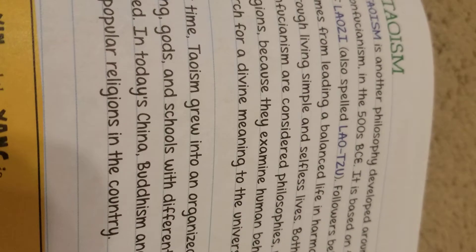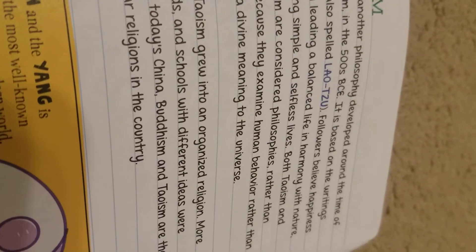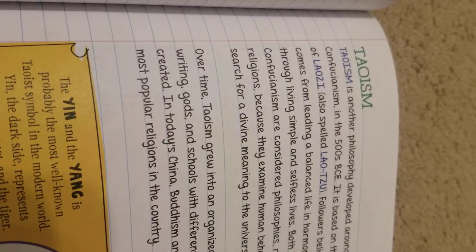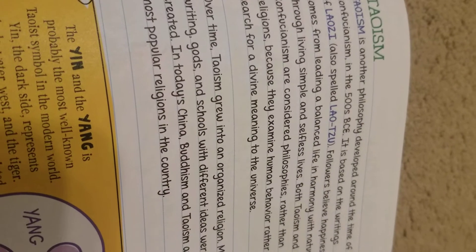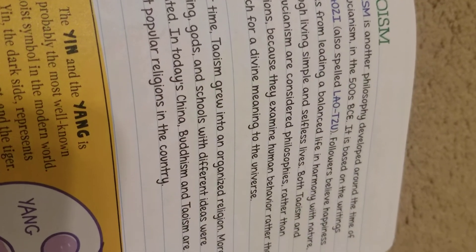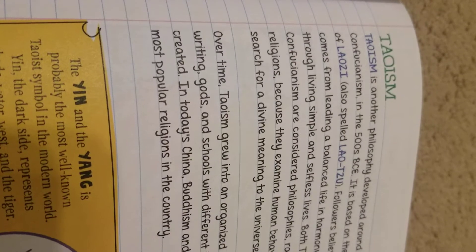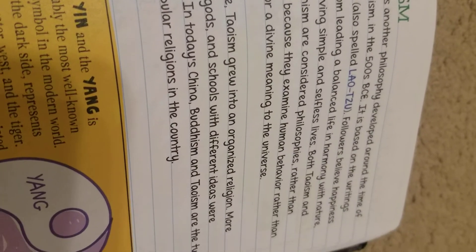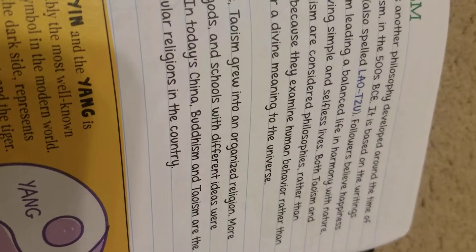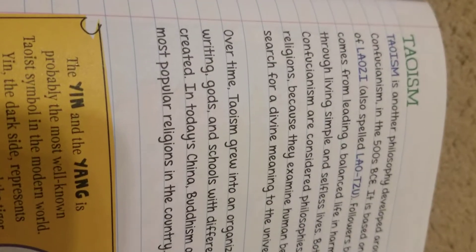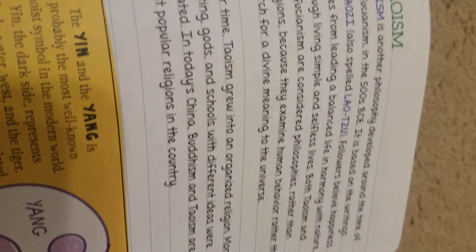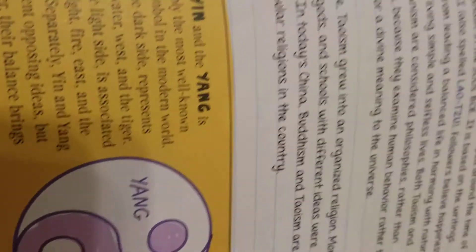Then came Taoism, another philosophy that developed around the time of Confucianism in 500 BC. It was based on the writings of Laozi. Followers believed happiness came from living in balance and harmony with nature.